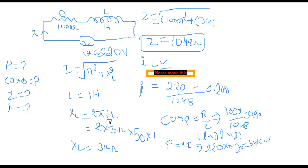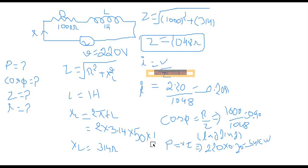We take the frequency as 50 Hz — always keep in mind that in AC circuits we use 50 Hz. Putting in the values with inductance L = 1 henry, we get XL = 314 ohms.